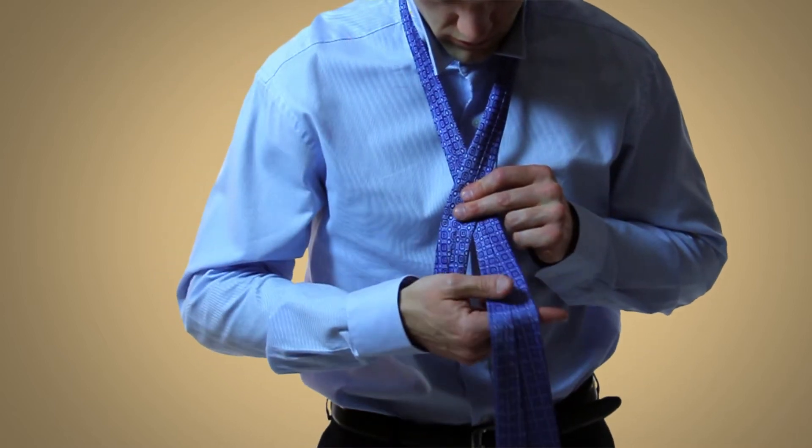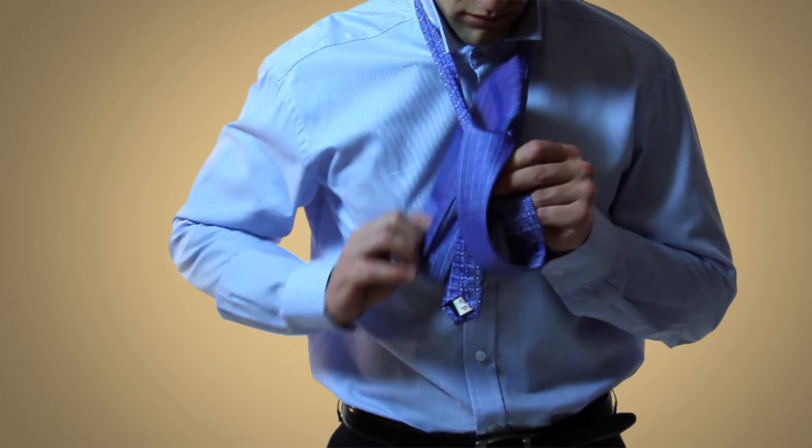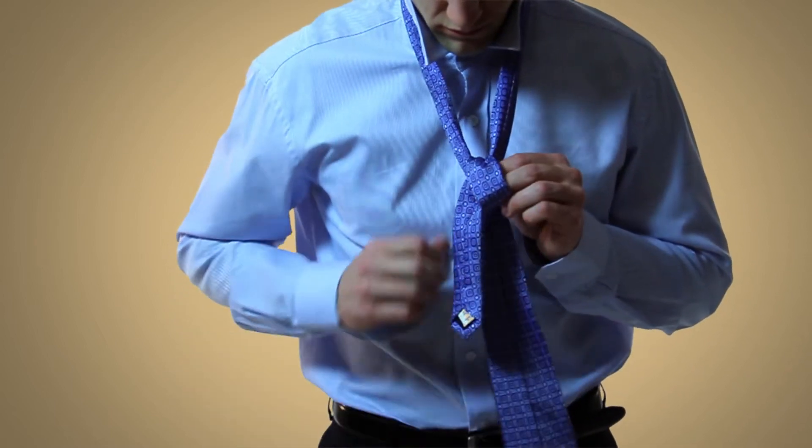Next, take the wide end under the narrow end and bring the wide end up and down through the loop created by your neck, pulling it down and to the right.